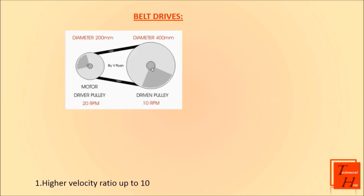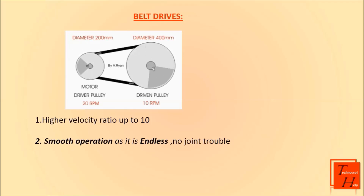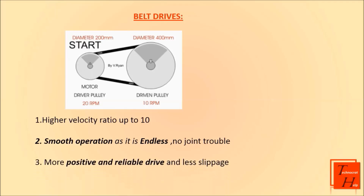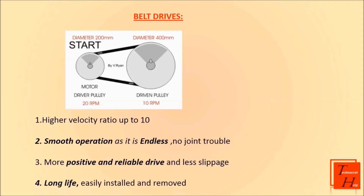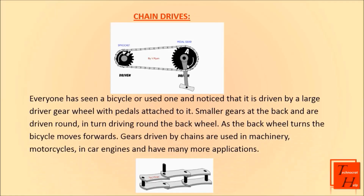Advantages of belt drives: first, it has a higher velocity ratio of up to 10; second, it has smooth operation as it is endless with no joint trouble; third, it has a more positive and reliable drive with less slippage; fourth, it has long life and can be easily installed and removed.